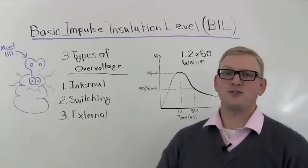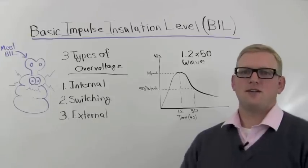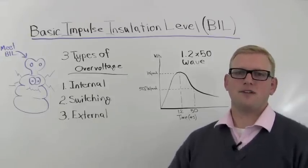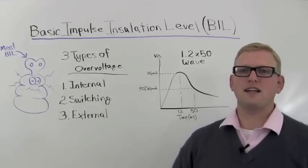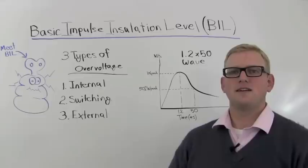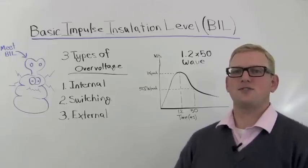Number three: external lightning strikes. BIL is always on the lookout for lightning strikes, and it can protect your equipment from dangerous lightning strikes.